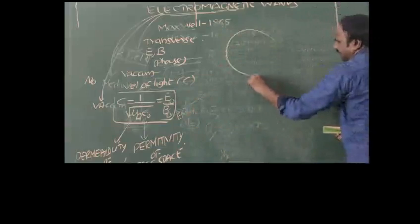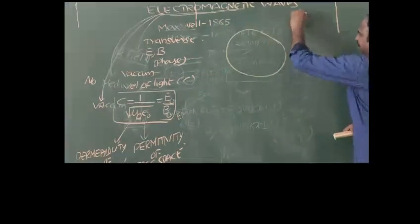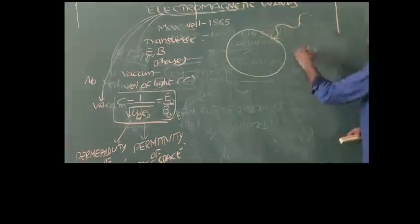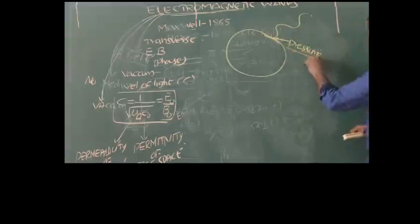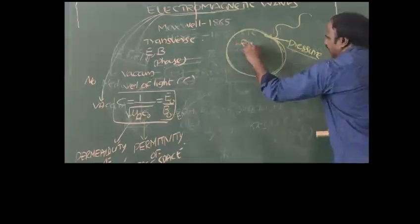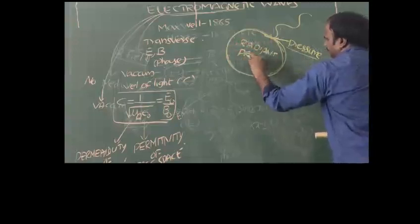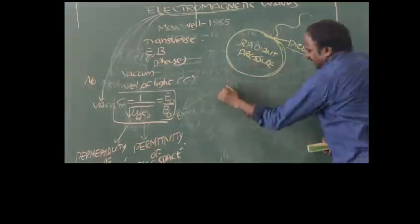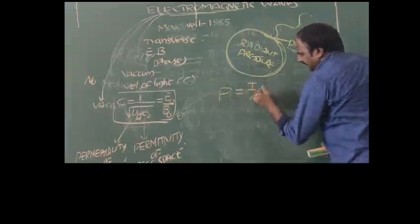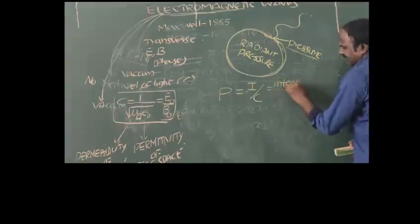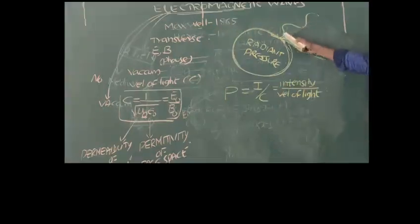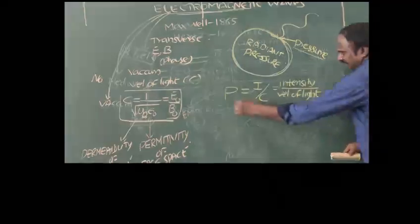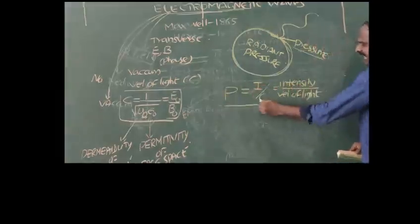If we take a surface and send an electromagnetic wave onto it, the electromagnetic wave exerts some pressure on this surface. Such pressure acting on the surface is called radiation pressure, whose formula is given by P = I/c, where I indicates intensity and c indicates velocity of light.